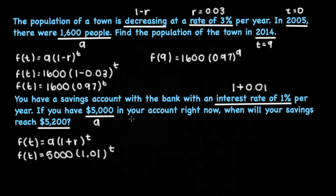Now to solve what we're being asked for, we're asked for when our savings will reach $5,200, which means we're trying to find the t value. So we're going to set this $5,200 equal to f of t. And you can simply solve from there.